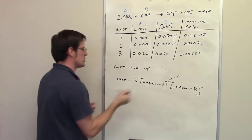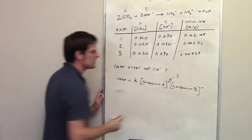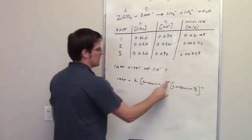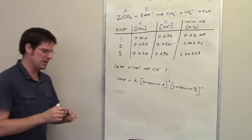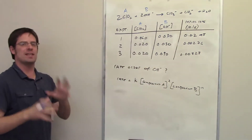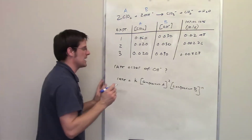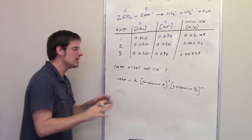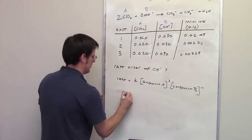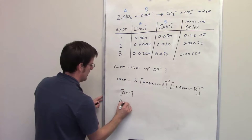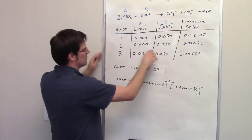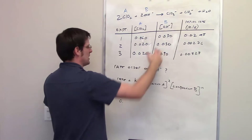The next question asks me to determine what the rate order is with respect to hydroxide, component B. We determined that M, the rate order with respect to component A, was 2. To find N for component B, I focus on experiments where component A's concentration was kept the same — that's experiments 2 and 3. I always divide the larger value by the smaller one, so I do experiment 3 divided by experiment 2. The bigger concentration of hydroxide is 0.09.